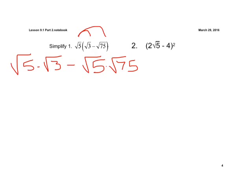Now let's use our multiplication property with radicals. If we have the square root of 5 times the square root of 3, we know that's the same as the square root of 5 times 3, minus — if we have the square root of 5 times the square root of 75, we know that's the same as the square root of 5 times 75.